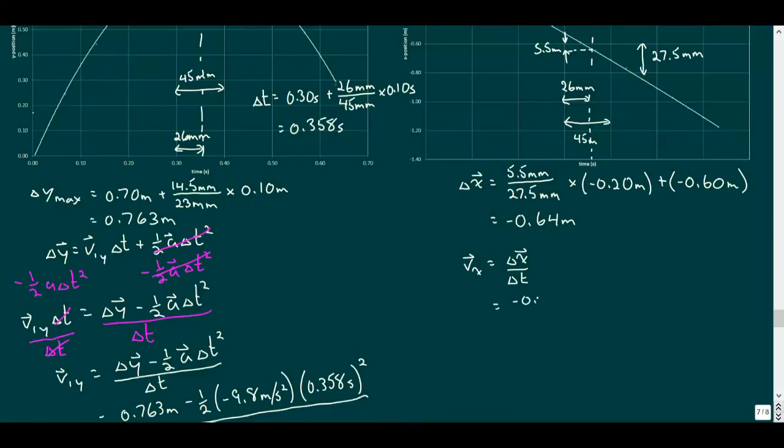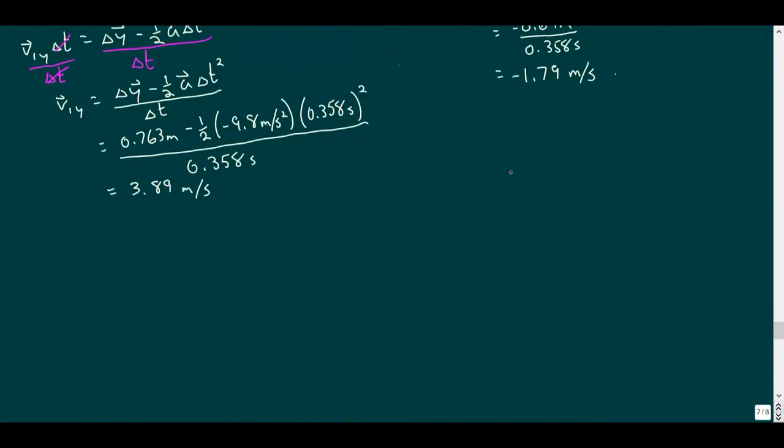Now using our uniform motion equation, we find the velocity in the x direction is 1.79 meters per second to the left.